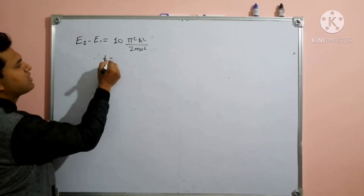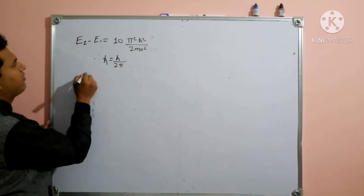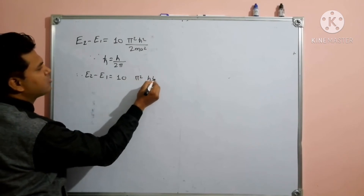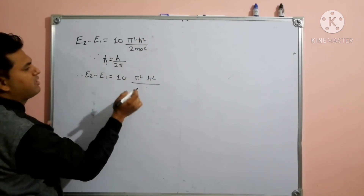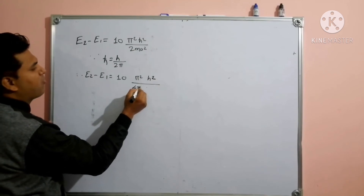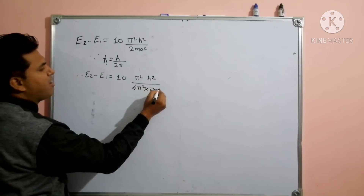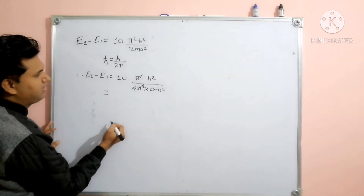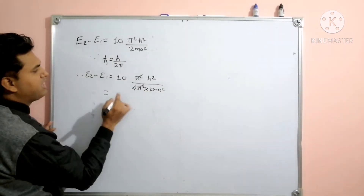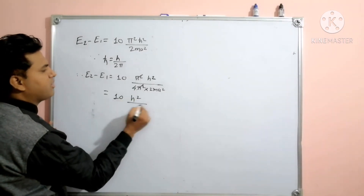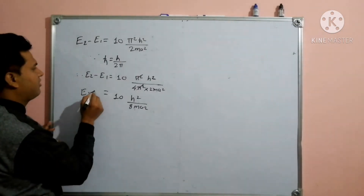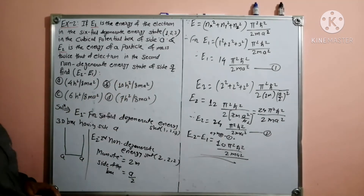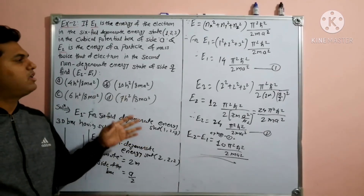Now E2 − E1 = (24 − 14) × π²ℏ²/(2mA²) = 10π²ℏ²/(2mA²). Substituting ℏ = h/(2π), we get E2 − E1 = 10h²/(8mA²). So option B is correct.